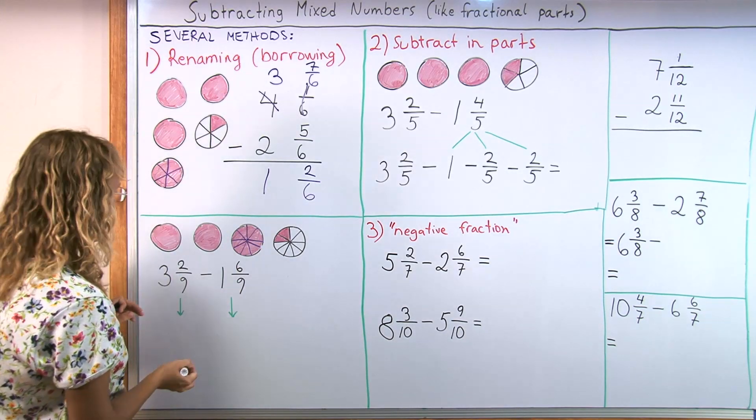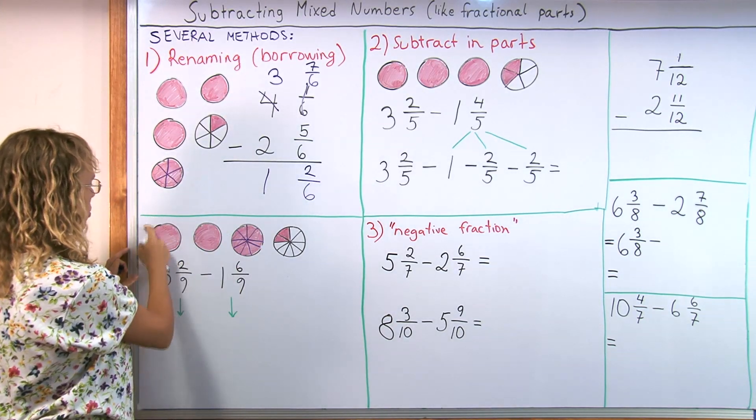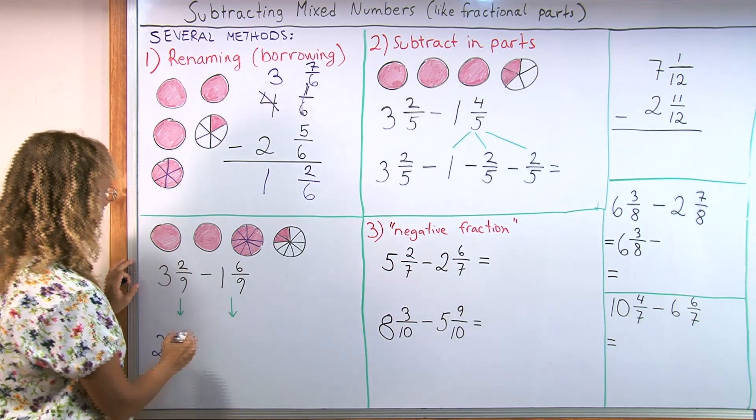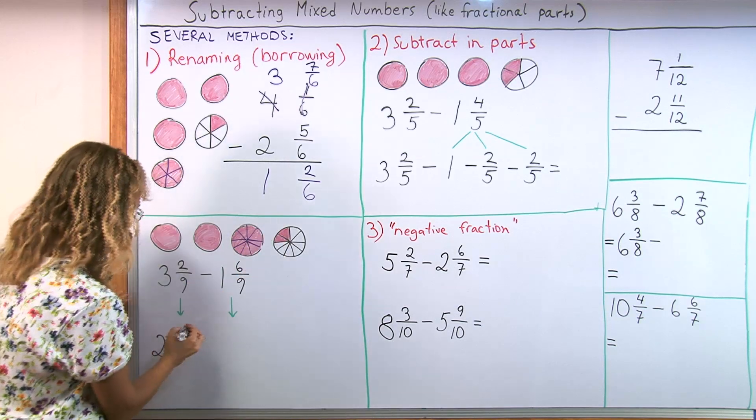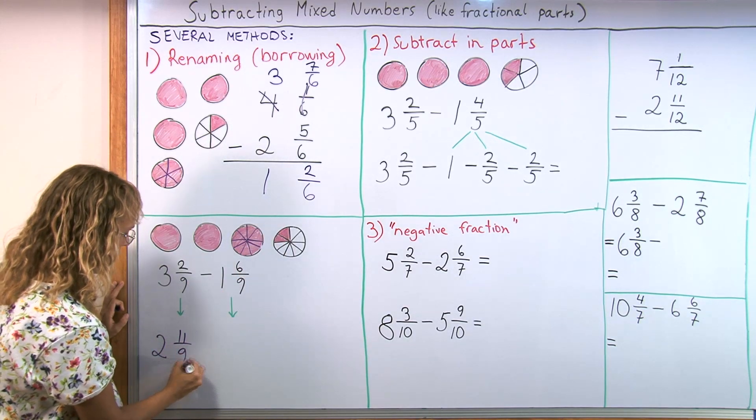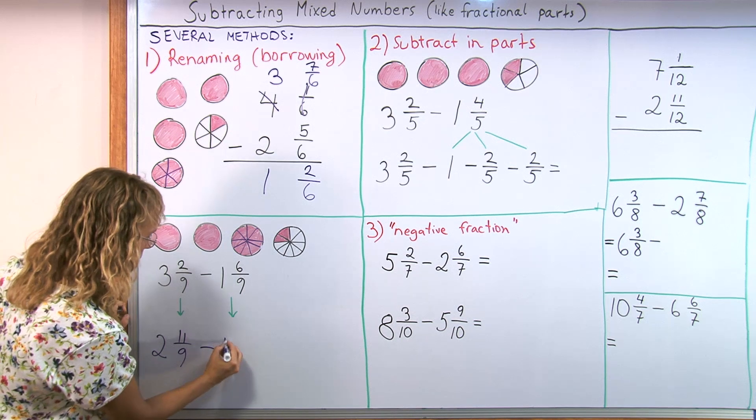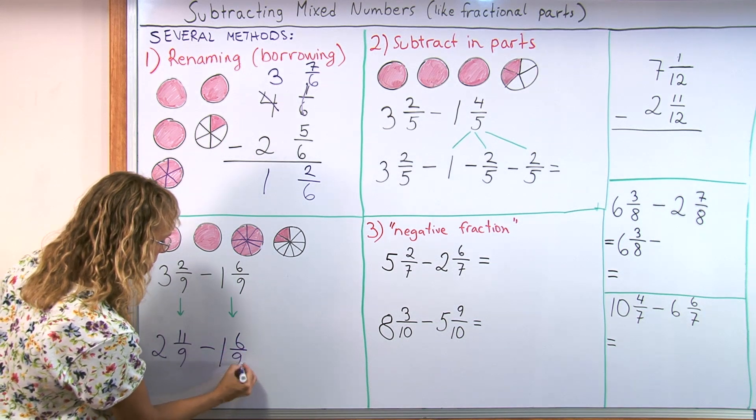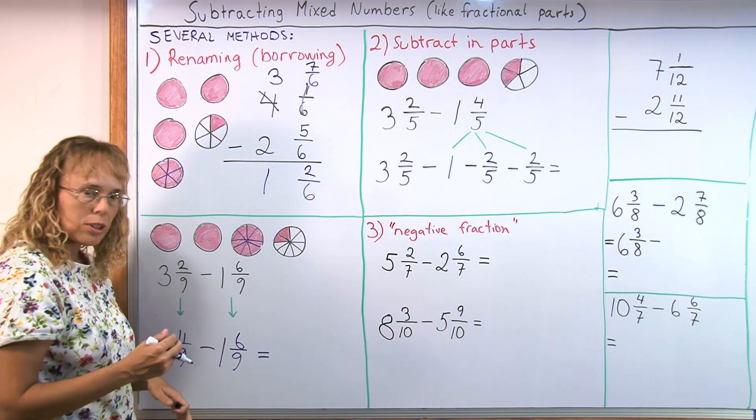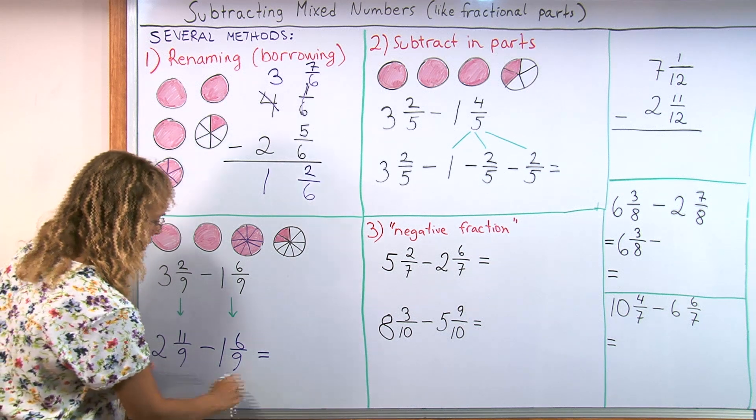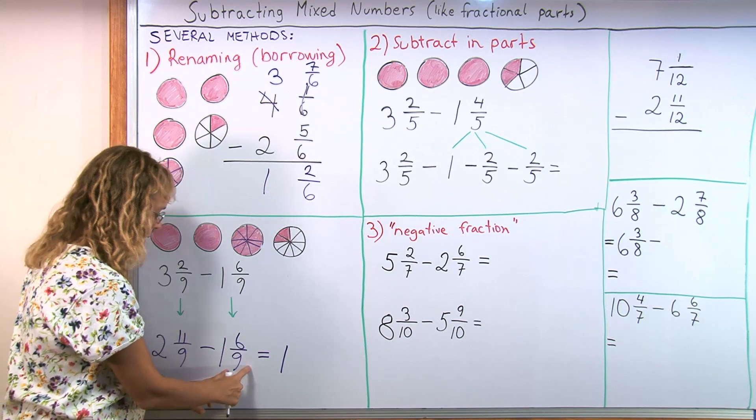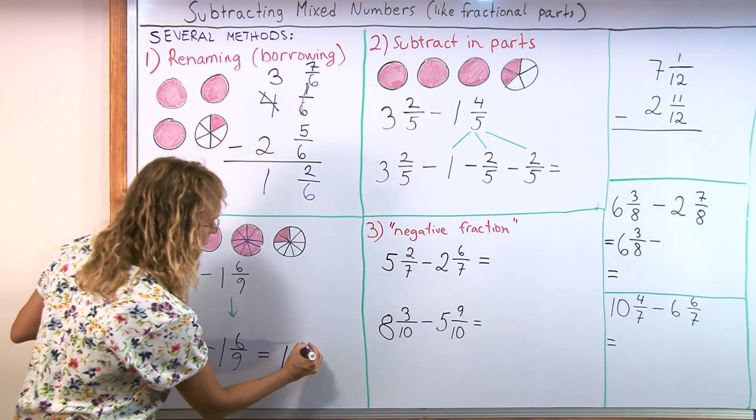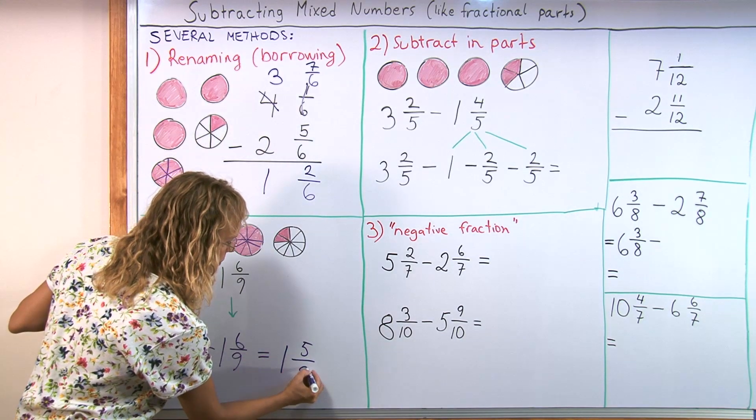Kind of like that. And now what happens is that we only have 2 left. 2 whole pies and then we have 9/9 and 2/9, which is 11/9. And then copy this number that's been subtracted. And now you do the same. You subtract the whole number parts. 2 minus 1 equals 1. And then 11/9 minus 6/9. Or 11 minus 6, which is 5. And the parts are ninths.